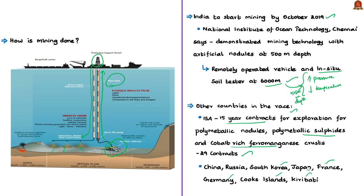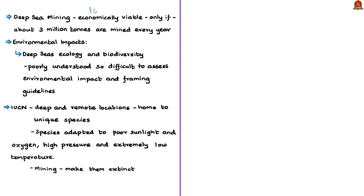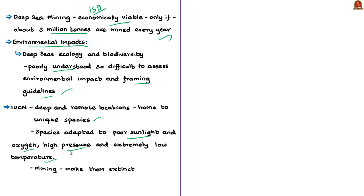Deep sea mining is estimated to be commercially viable only if about 3 million tons are mined per year. The environmental impact remains poorly understood — the deep sea's ecology and biodiversity makes it difficult to assess damage and frame guidelines. According to the IUCN, these remote locations may be home to unique marine species adapted to low sunlight, low oxygen, high pressure, and extremely low temperatures. These species could go extinct even before being discovered due to mining activities.